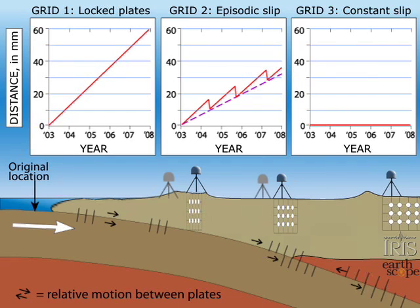The third station does not move, and the grid shows no deformation, so the graph is flat.